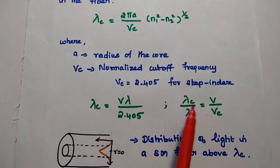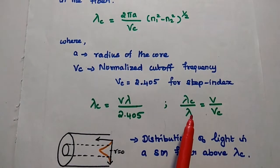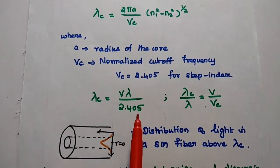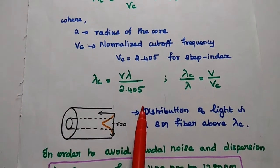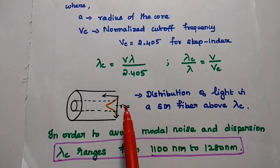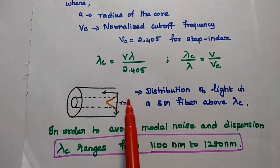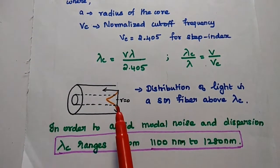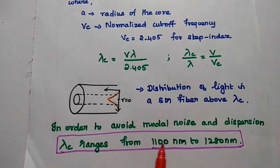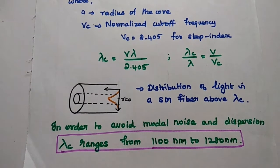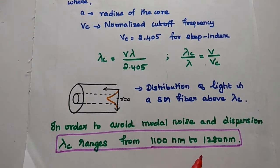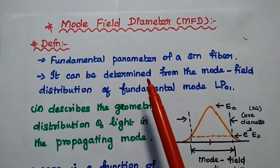We can take the ratio λC / λ = V / Vc. From this, we can get the cutoff wavelength in terms of normalized frequency as V × λ / 2.405. This shows the distribution of light inside the single mode fiber above the cutoff wavelength range — the geometric distribution of light in the propagating mode. To avoid modal noise and dispersion, the cutoff wavelength should be in the range from 1100 nm to 1280 nm.